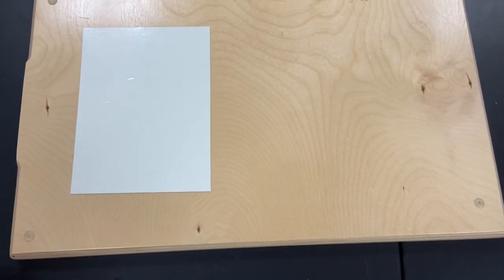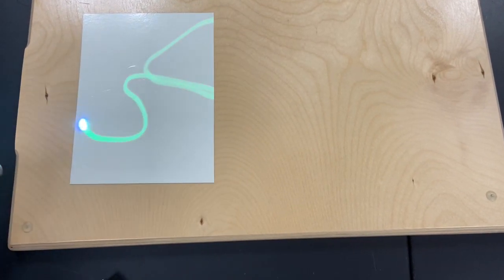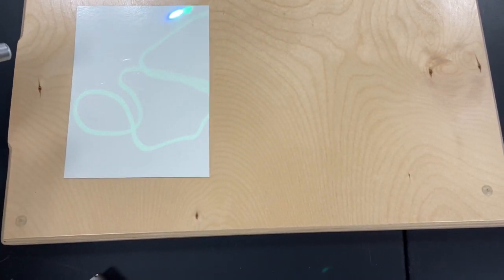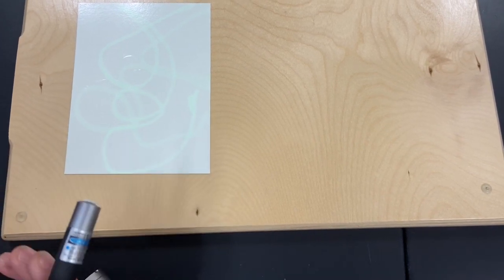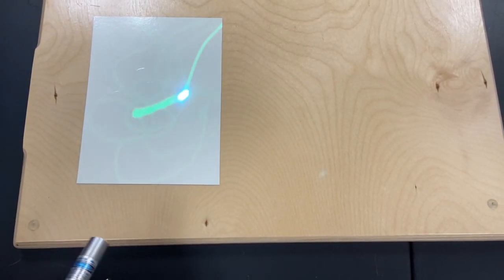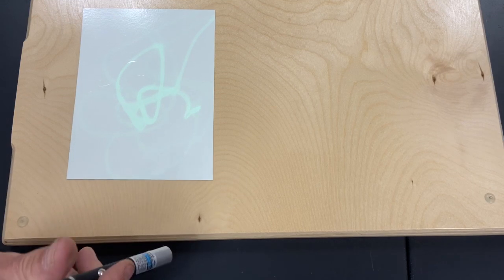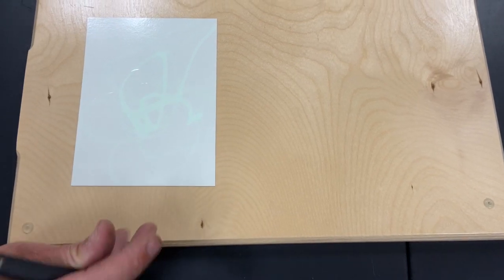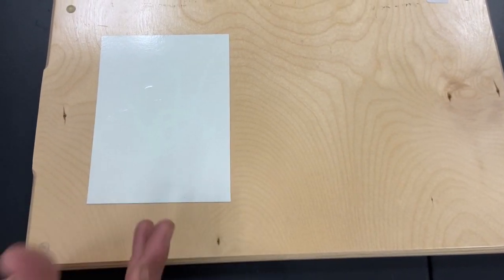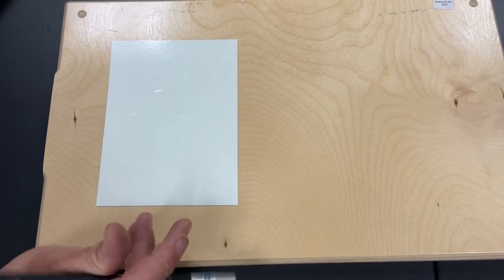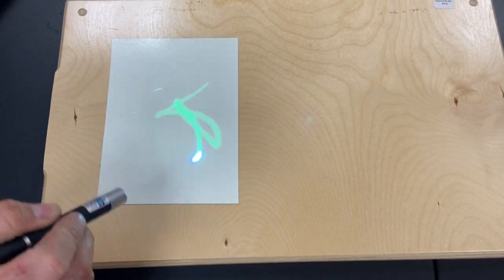But if I bump up to a purple laser, now the paper glows. The reason why the paper glows is because purple photons have enough energy to excite the electrons in this paper, and then those electrons jump down from higher energy levels and they give off that light. They give it off as green light, and we call that glowing.